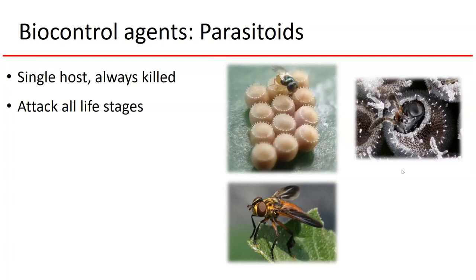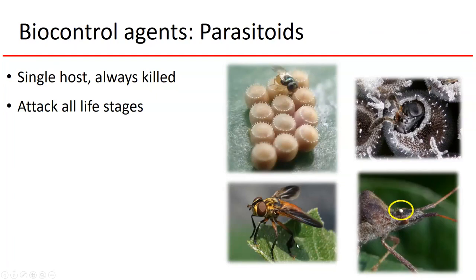Compare that to the tachinid brush-legged fly, a parasitoid that attacks leaf-footed bugs and squash bugs in their late nymph and adult stages. It lays its eggs on the outside of the squash bug's body near the head; the larvae hatch, burrow into the thorax, feed on the internals, and eventually kill it. But by then the host has already developed to a late stage, fed on the crop, and may have even reproduced. So in general, parasitoids that attack earlier stages of a pest are more effective biological control agents than those attacking later stages.